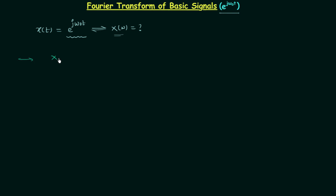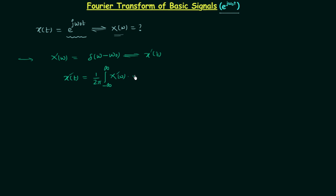To find the Fourier transform, consider an auxiliary Fourier transform X'(ω) = δ(ω − ω₀). From here, we use the inverse Fourier transform formula to obtain the corresponding time domain signal x'(t). We know that x'(t) = (1/2π) ∫₋∞^∞ δ(ω − ω₀) · e^(jωt) dω. Applying the sifting property of the impulse signal, ω is replaced by ω₀.